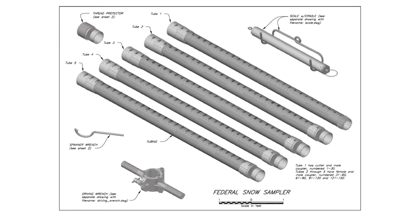The federal snow sampler is what the NRCS uses as its standard practice for measuring snow water equivalent. It has a number of pieces that fit into a folding bag you can zip up and take to the field. Before discussing how to use it, let me describe some key important parts of the federal snow sampler.